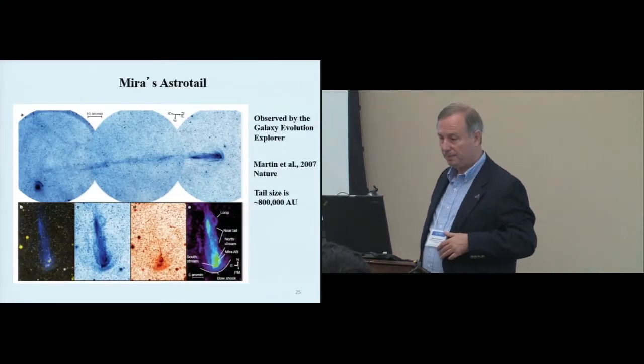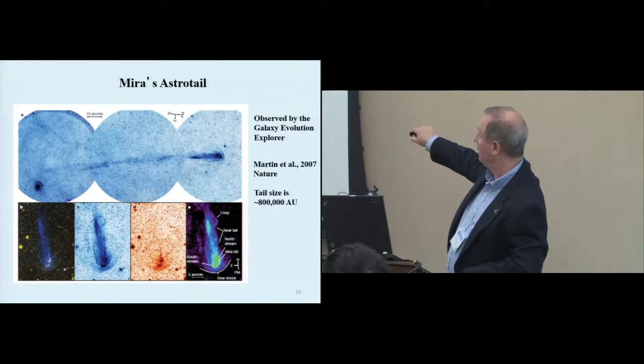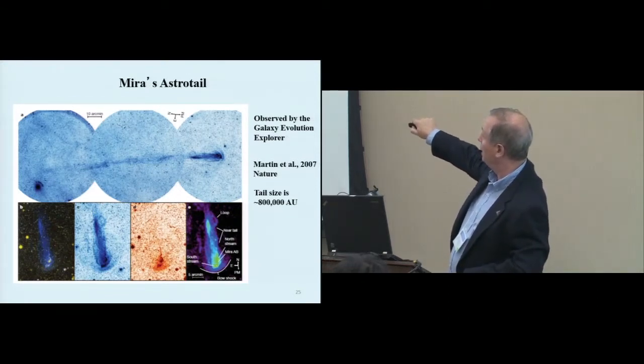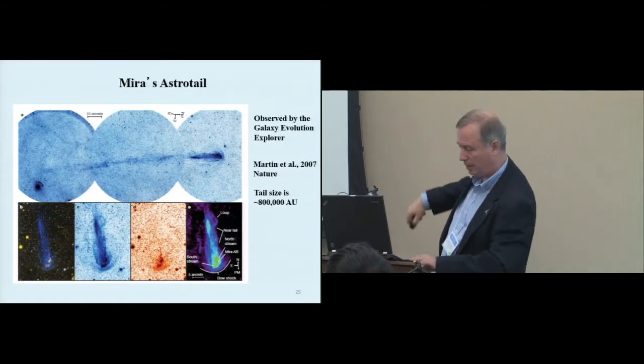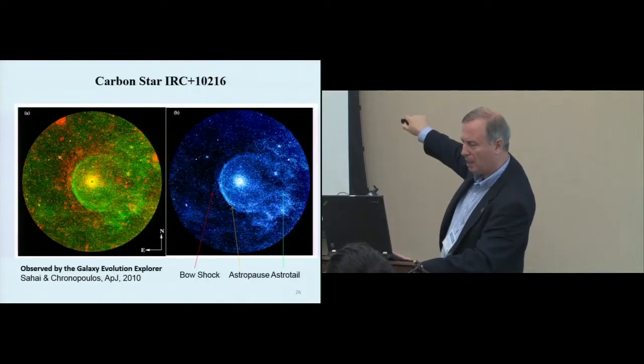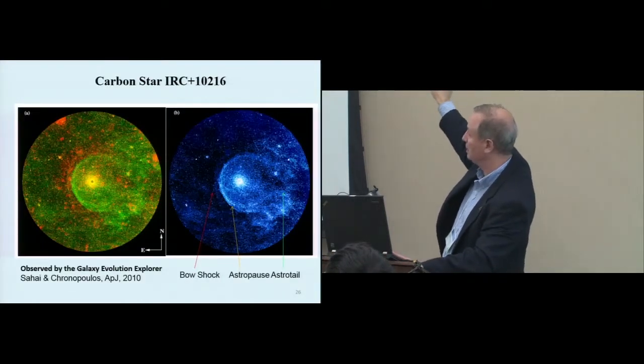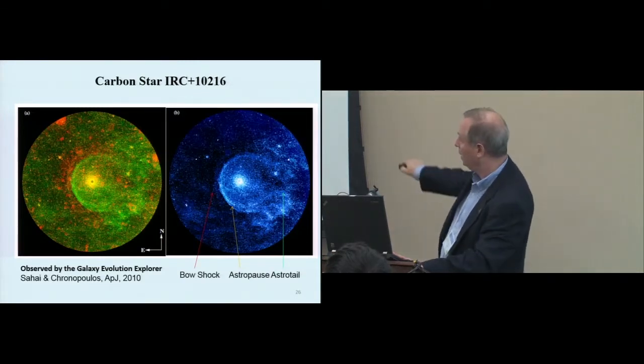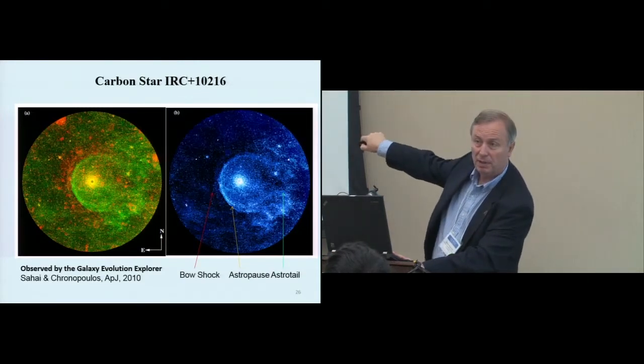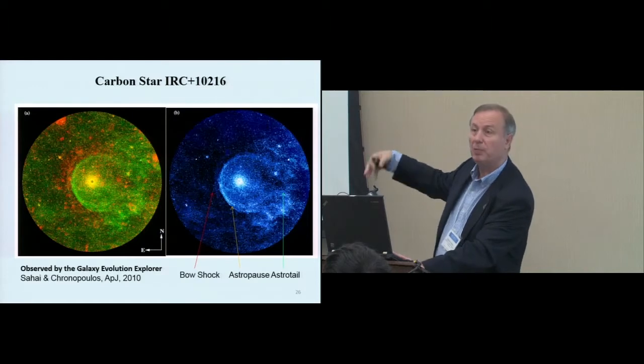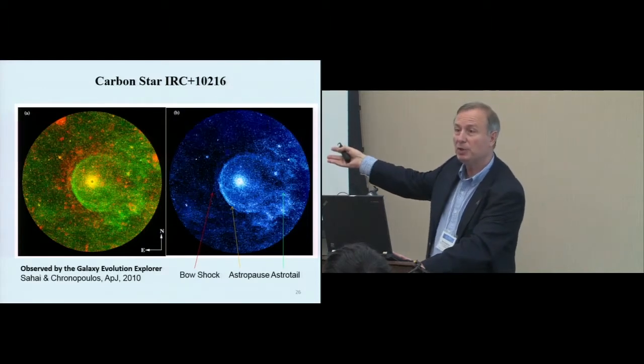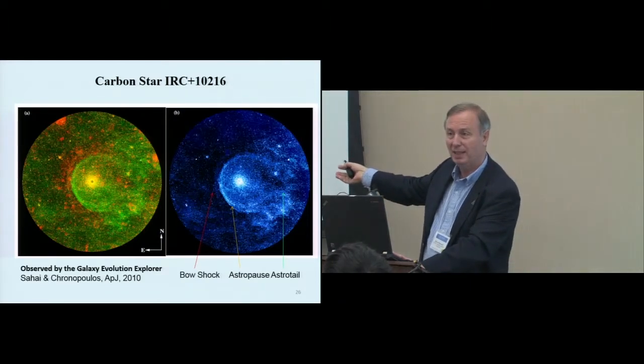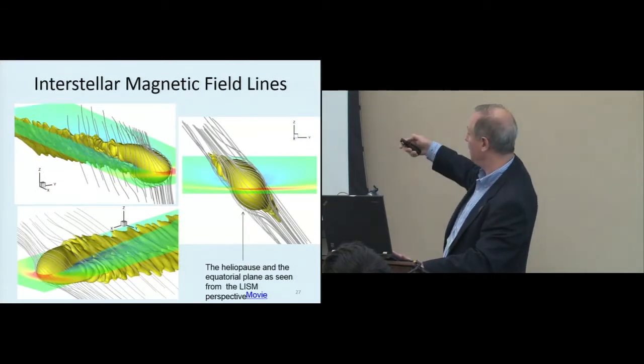Astro tails. These are observable. It's a Mira astro tail. This one, carbon star IRC plus something. Completely different, very much different from the previous. But we can see them. We cannot see the heliopause tail, but we can model it. And that's what we did.